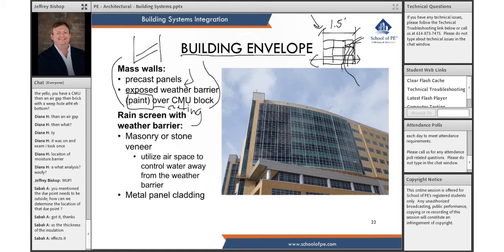This is a hospital in Galveston that we worked on. All this stone masonry-looking limestone is actually just precast concrete. There's no separate weather barrier there — the precast itself is the weather barrier. Then we have a rain screen with a weather barrier anywhere there's masonry or stone.